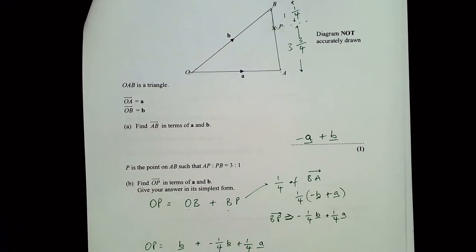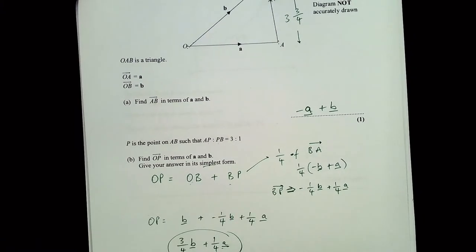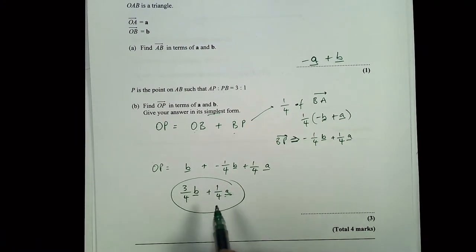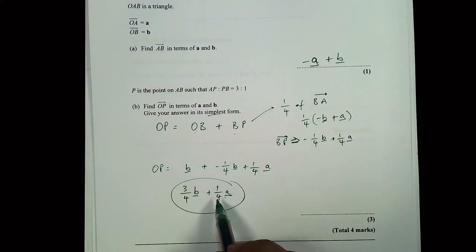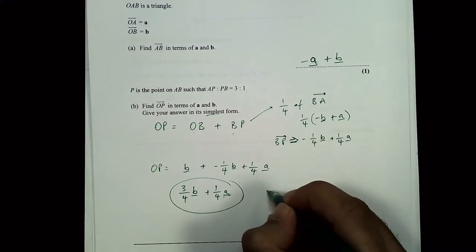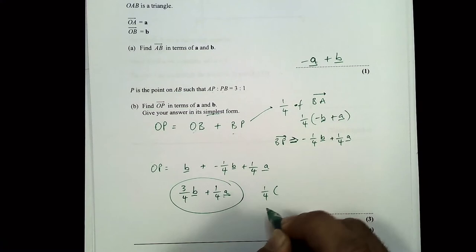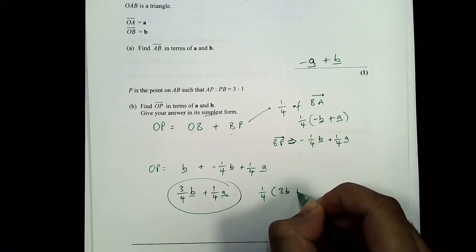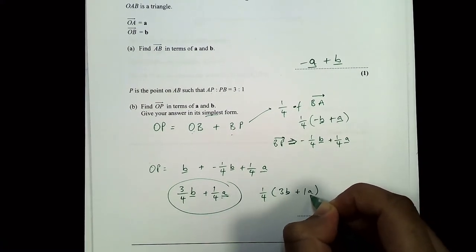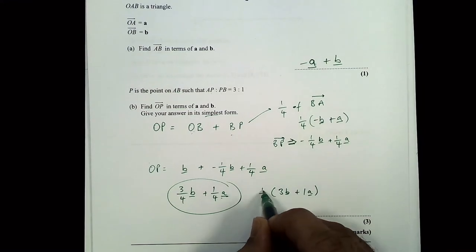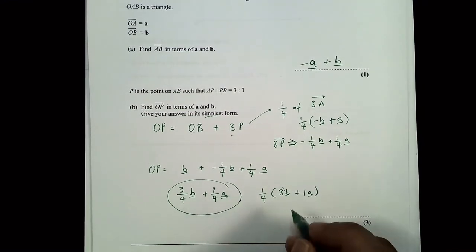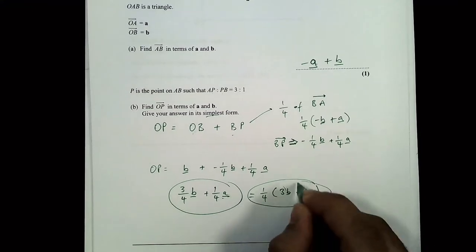The question asks for simplest form, so factorize by taking out a quarter: OP = ¼(3b + a). That is the final answer.